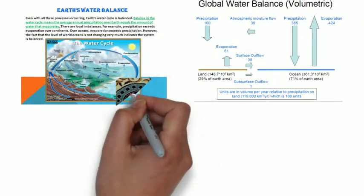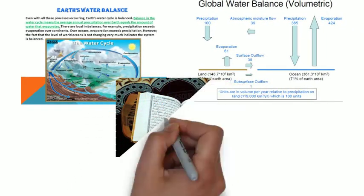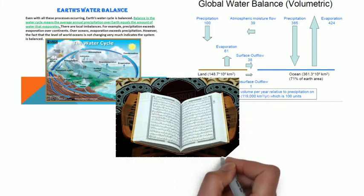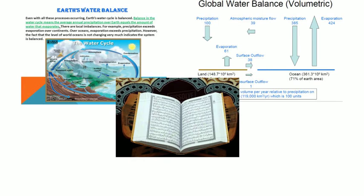In the Holy Quran, more than 1400 years ago, Allah Almighty mentioned that water is sent down to Earth in a due measure, indicating a specific amount of water that is required for the water cycle.